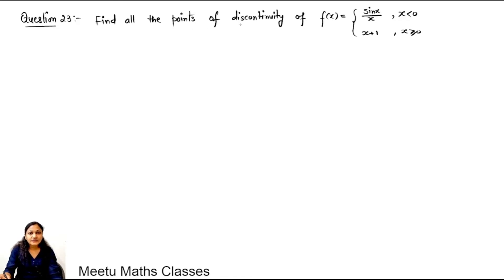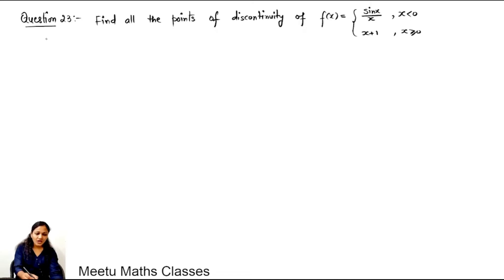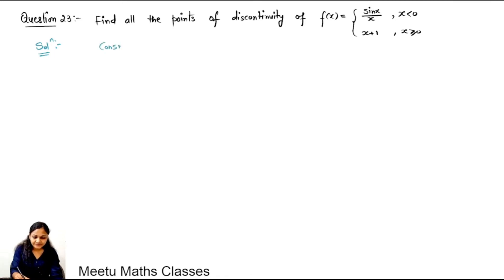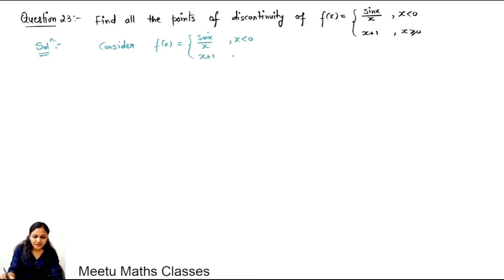Find all the points of discontinuity of this function. The function is defined as sin x upon x when x is less than 0, and x plus 1 when x is greater than or equals to 0.